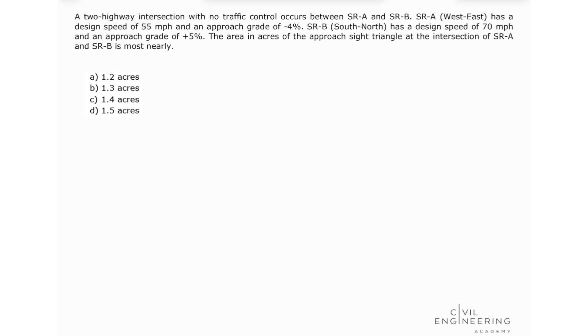Okay, so we are looking into a problem that talks about an intersection with no control. So let's write this down. This is an intersection with no control. And we have here, let's make a sketch. This is our State Route A and this is our State Route B. State Route B has an upgrade from south to north plus 5% and State Route A, west to east, minus 4%.